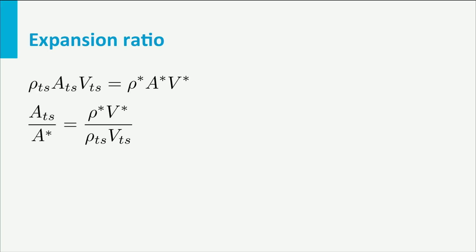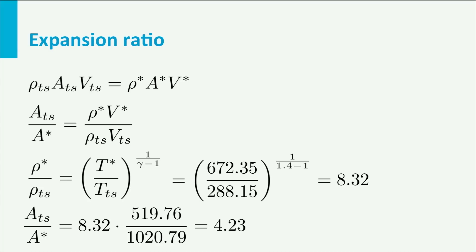Both velocities have been computed earlier. So what we need to do is find the ratio of the densities between the two stations. Since we already know the temperatures in both stations, one of the isentropic relations written in this form will be very useful. We find ρ*/ρTS is 8.32. And finally we see that the expansion ratio is equal to 4.23.